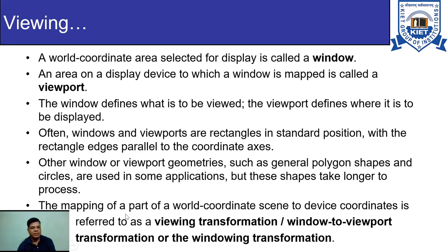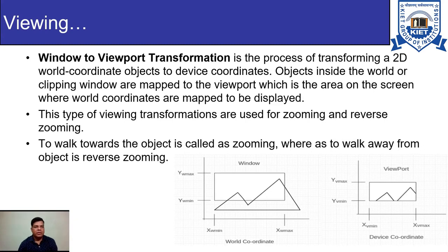While a non-rectangular window or viewport will take extra processing time. The mapping of a part of a window coordinate scene to device coordinates is referred to as a viewing transformation, or window-to-viewport transformation, or windowing transformation — all three terms are equivalent. Window-to-viewport transformation is the process of transforming two-dimensional world coordinate objects to device coordinate objects.